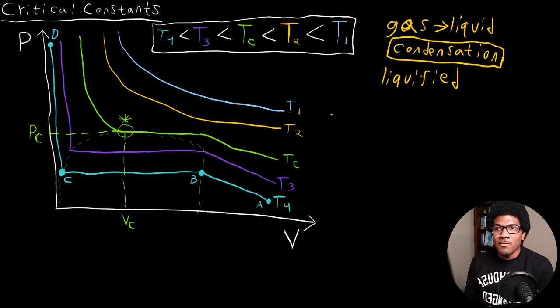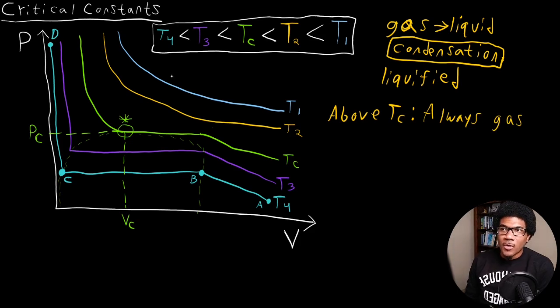Now, above this critical temperature, at any temperature above TC, the critical temperature, this material will always be a gas. So this substance is always a gas. So relating that to what we see here, this isotherm is for gas and this one is for gas. T1 and T2 are fully gas isotherms.